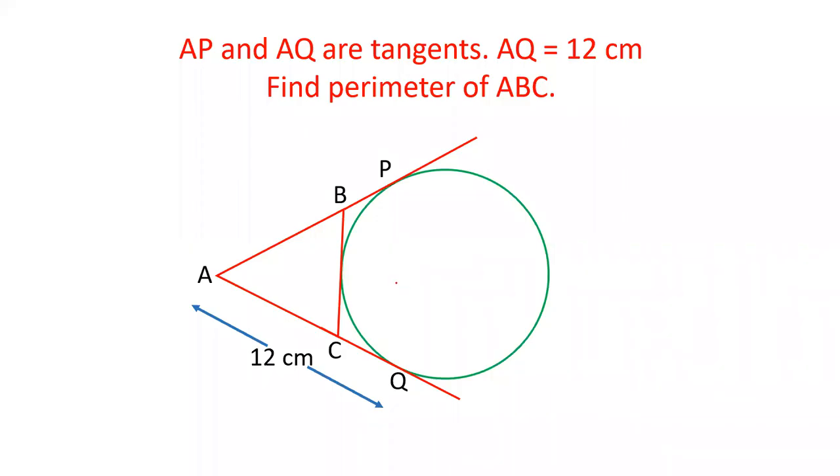Hello friends, welcome to our YouTube channel SSC Selector. Here there is a circle given and there are two tangents from A drawn on this circle. They are AP and AQ. Another tangent is BC, and we have triangle ABC. We have to find out the perimeter of this triangle ABC.